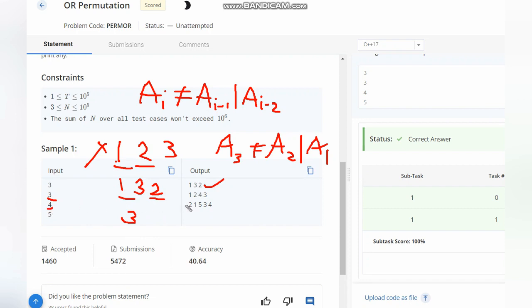Now in case of 4, we have 1, 2, 4, 3. So here we can check for a_3 and a_4. For a_3 we will check a_1 and a_2. So 1 and 2 OR is... no issues.